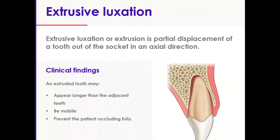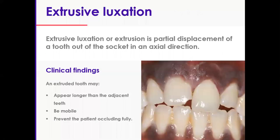Extrusive luxations, or extrusions, are those where a partial displacement of a tooth out of the socket in an axial direction has taken place. It is not a lateral or sideways coronal displacement — the tooth literally just comes out of the socket in that axial direction.